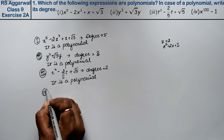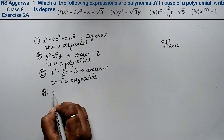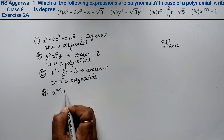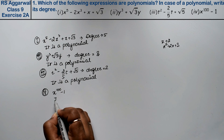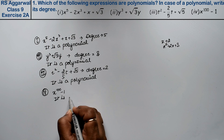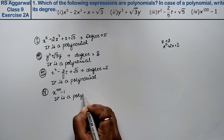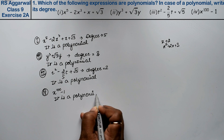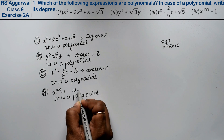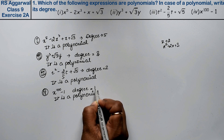Fourth part is x to the power 100 minus 1. It is also a polynomial, and the degree is 100.